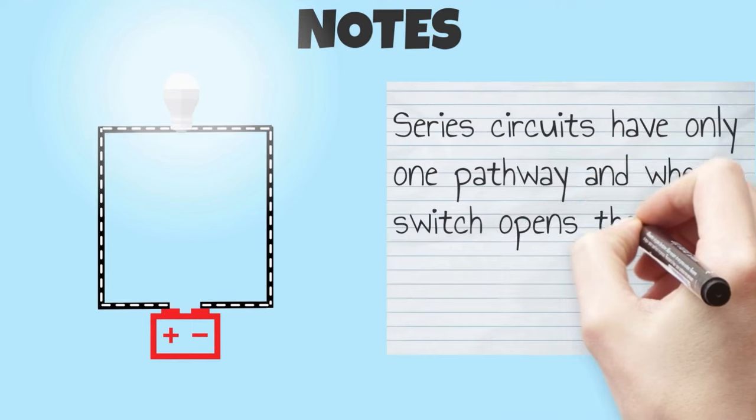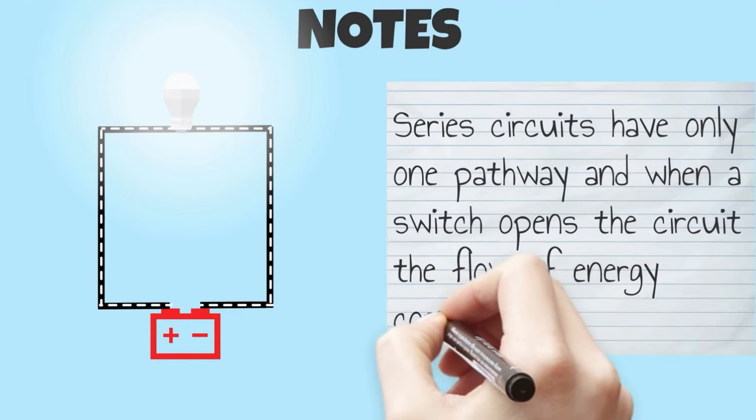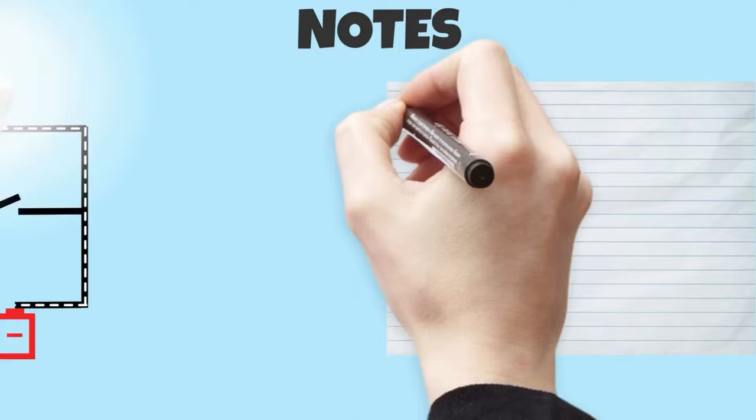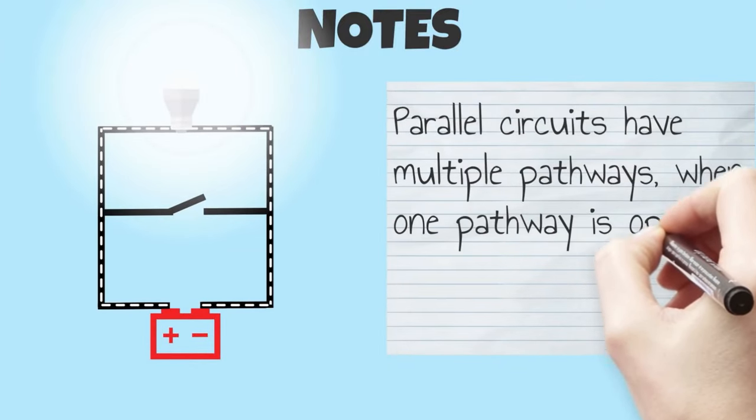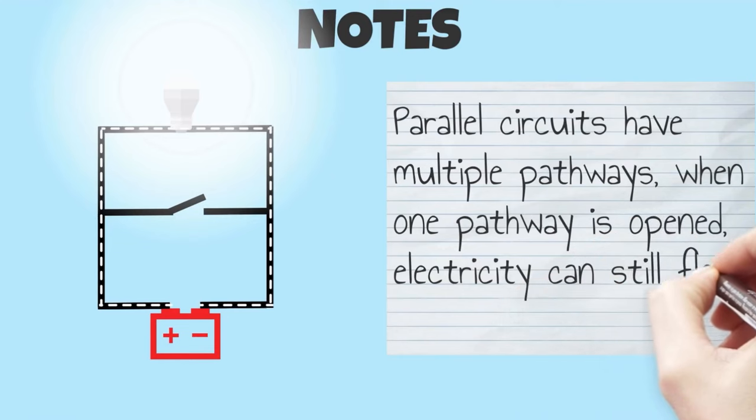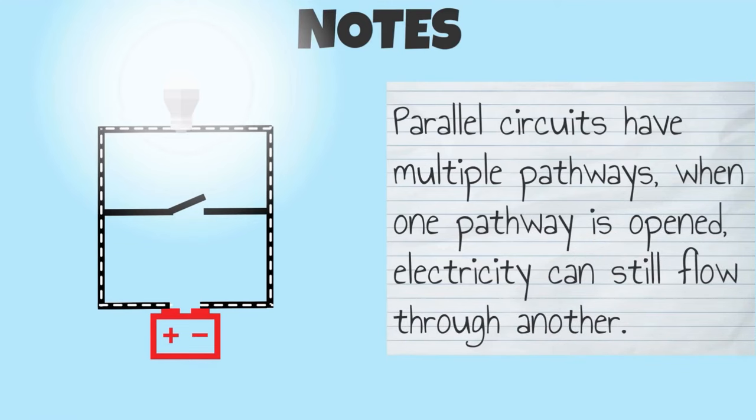Series circuits have only one pathway, and when a switch opens a circuit, the flow of energy completely stops. Parallel circuits have multiple pathways. When one pathway is opened, electricity can still flow through another.